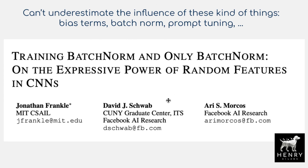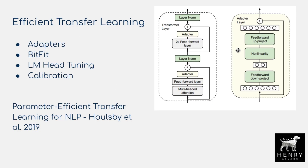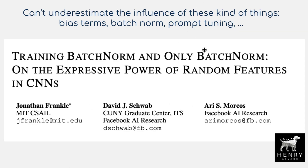Summarizing this idea: you can use small parameters like the bias terms in BitFit to influence the neural network. The paper "Training BatchNorm and Only BatchNorm" shows how normalization parameters like the gain and bias of batch normalization can achieve pretty high performance on CIFAR-10, showing that even these small parameters like bias terms can really influence the final performance of the network.